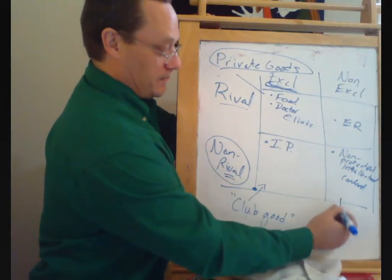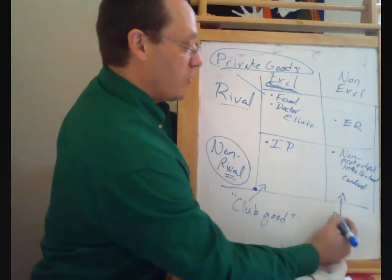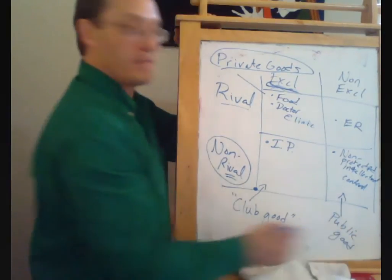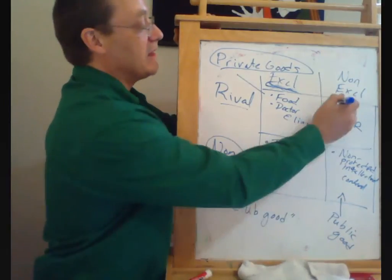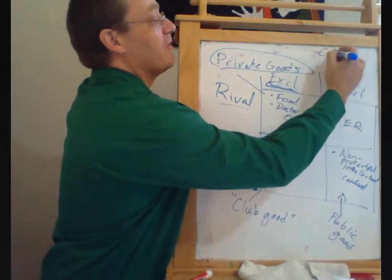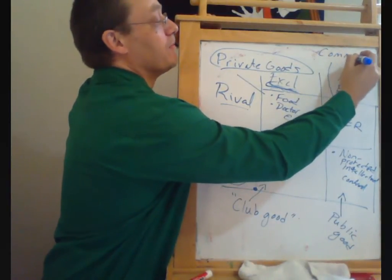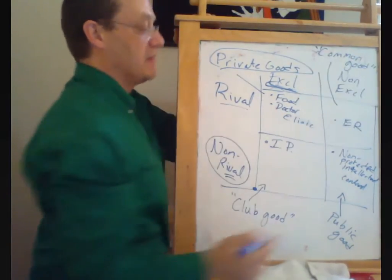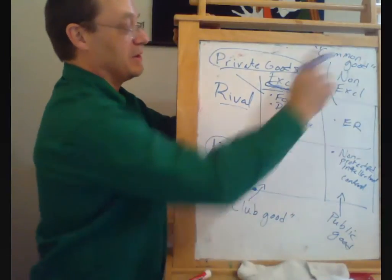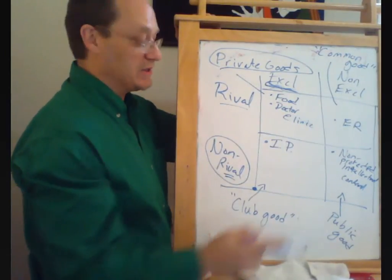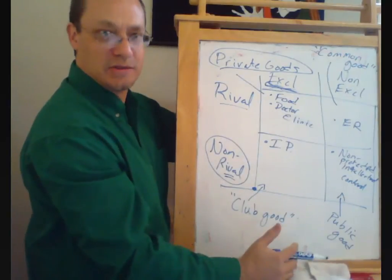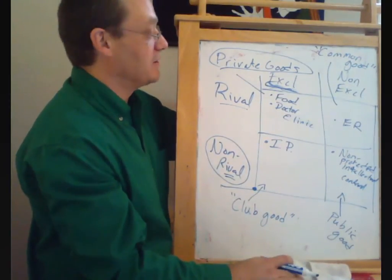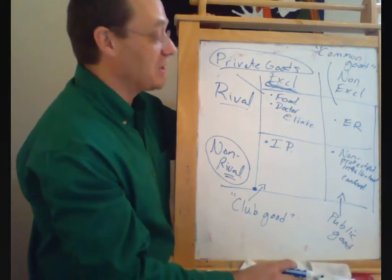Over here we have what's called a public good. And then finally up in this corner we have what's called a common good. It's kind of unfortunate that club good, public good, and common good maybe all sound very similar. In particular, public goods and common goods sound very similar. But those are the names that the economics profession has decided upon, so we're kind of stuck with those.